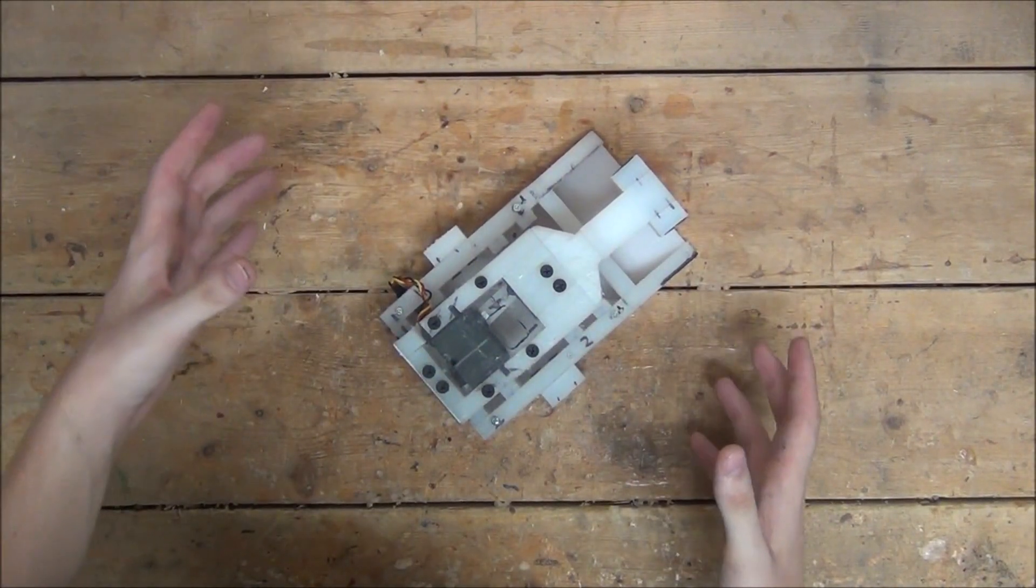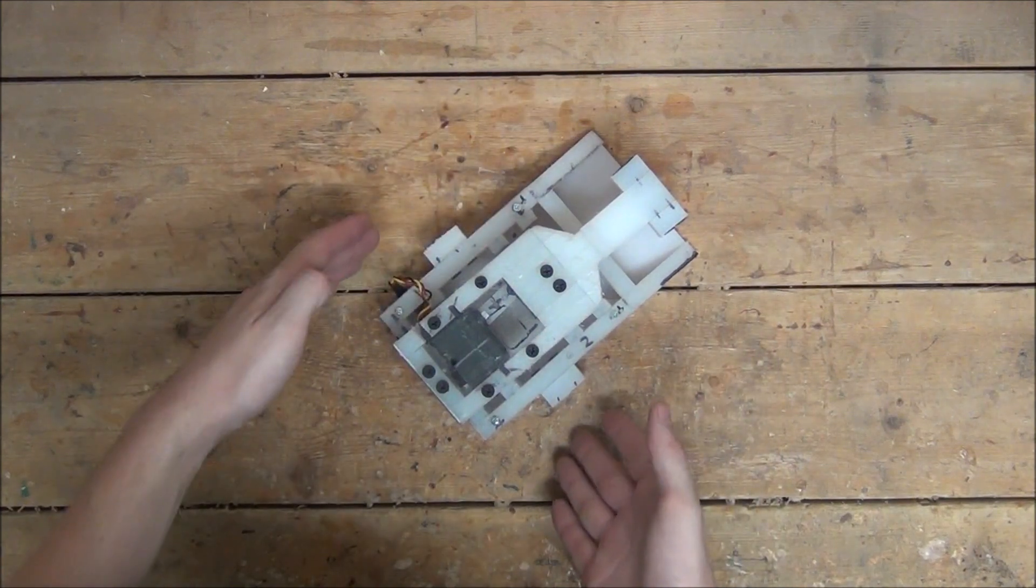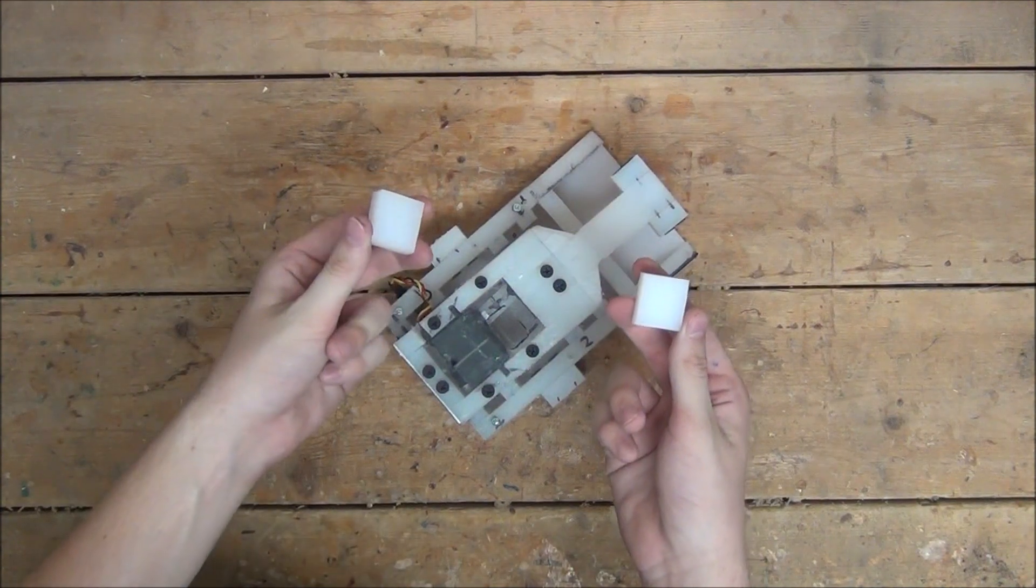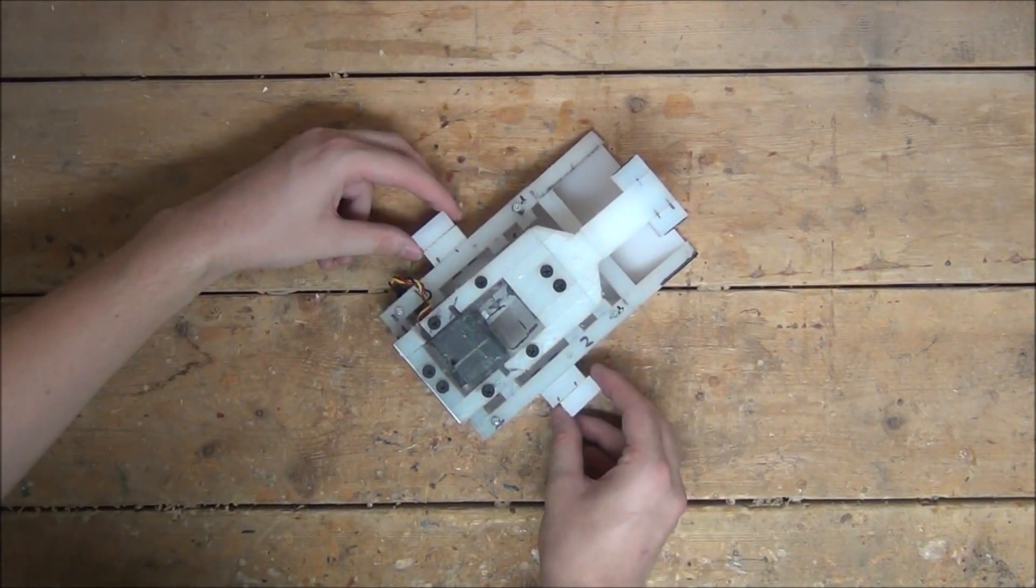So to continue, the first thing I want to do is construct the side protector plates or wheel fenders, if you will. To do this, I'm going to cut out two inch square pieces of plastic to add on to the side pieces we already have.